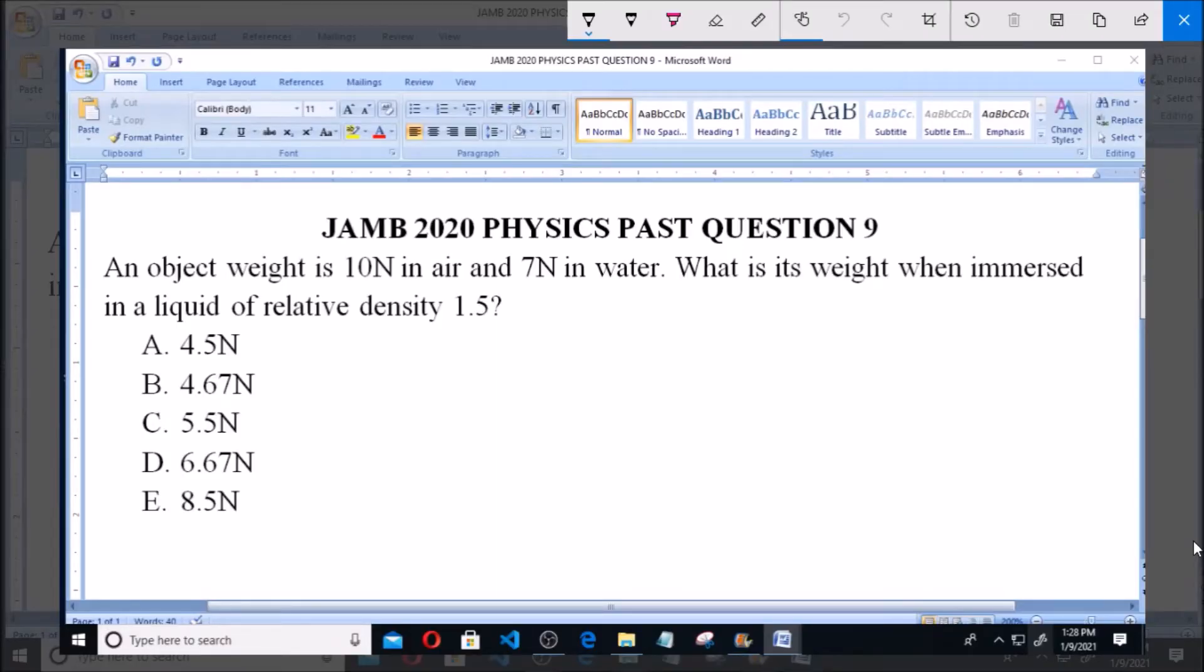Good day and welcome. I will be answering JAMB 2020 Physics Past Question 9. An object's weight is 10N in air and 7N in water. What is the weight when it's immersed in a liquid of relative density 1.5?